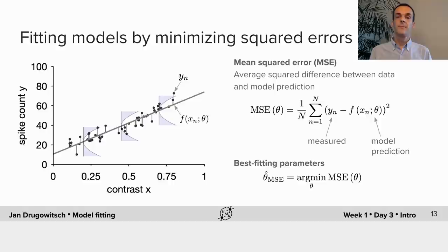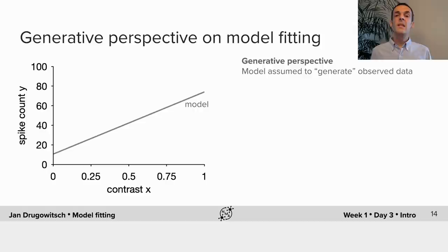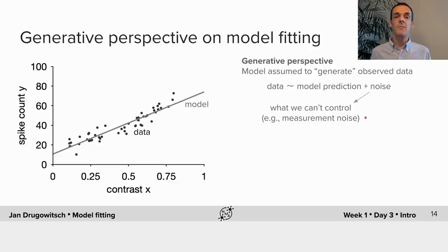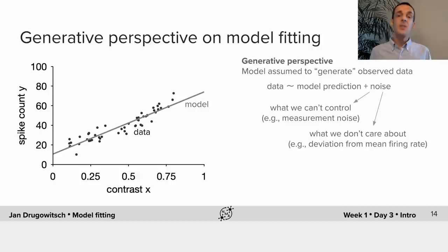To introduce the second philosophy of model fitting we need to take a generative perspective, which assumes that the model is the thing that generated the observed data. In our example, our model would be the gray line and the data would be a noisy version of that line — so the data is the model prediction plus some noise. The noise reflects two components: the first is everything we can't control, such as measurement noise; the second represents everything we don't care about, for example the stochasticity inherent to spike generation. Both components in combination determine the distribution of our noise term, and once we have specified this distribution what we get is the likelihood function.